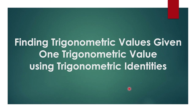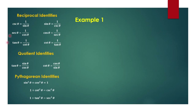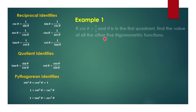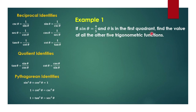In this video, we're going to solve trigonometric values given one trigonometric value by using trigonometric identities. We're going to refer to these identities in solving. For example 1, sin theta is equal to 4 over 5, and theta is in the first quadrant. We have to find the value of the other five trigonometric functions using trigonometric identities.